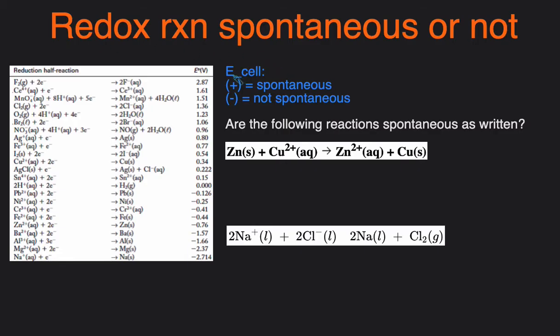And to do so, you just need to look at the cell potential, or the E-cell. If the E-cell is positive, then it'll be spontaneous, and if it's negative, it'll be non-spontaneous. Spontaneous just means that the reaction will happen without outside help. It'll happen naturally.